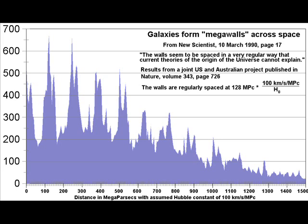What could possibly cause such regular things to happen in geological deposits? There must be something going on in the wider universe that would do this. This graph shows megawalls across space, similar to megacycles in geology. The walls are spaced very regularly and were determined by a joint US and Australian project, with the report published in Nature. It gives the distance between these walls as 128 megaparsecs divided by h-north. With the most accurate Hubble constant determined more recently, this translates into light years as 588 million light years. It seems very likely that this is in fact 586 million light years, and that this is showing huge waves in space which correspond with the 586 million year cycle in geological deposits.